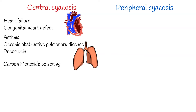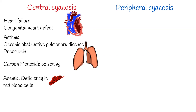Carbon monoxide poisoning: Carbon monoxide is a colourless, odourless gas that can be produced by burning fuel. Exposure to high levels of carbon monoxide can cause central cyanosis by replacing the oxygen in the blood with carbon monoxide.